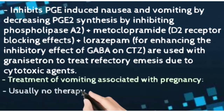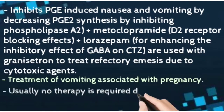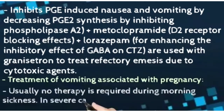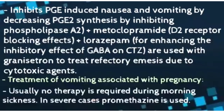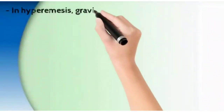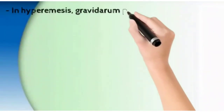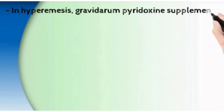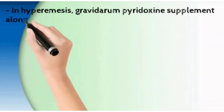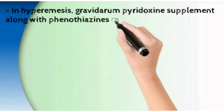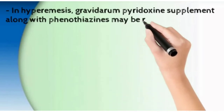For vomiting associated with pregnancy, no therapy is usually required during morning sickness. In severe cases, promethazine is used. In hyperemesis gravidarum, pyridoxine supplementation along with phenothiazines may be required.